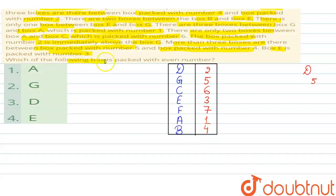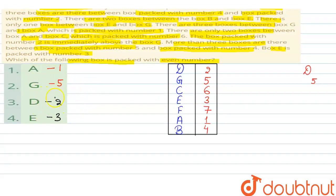The question asks: which of the following boxes is packed with an even number? So we check our options. Option A — the number against A is 1. Option D — the number against D is 5. Option D — let me check — that is 2. Option E — the number against E is 3. So we can see that the correct even number corresponds to box D. The correct answer is option D. I hope the solution is clear. Thank you.